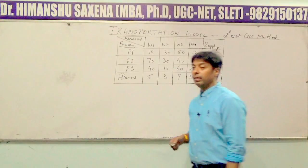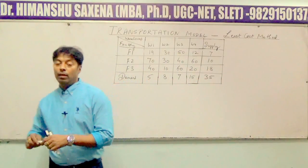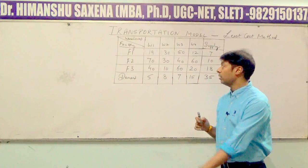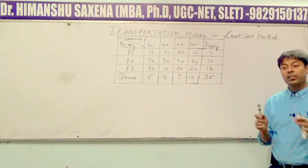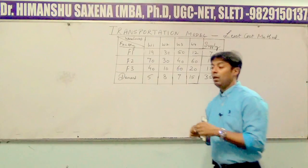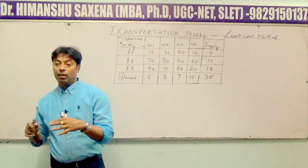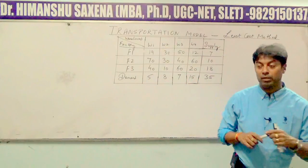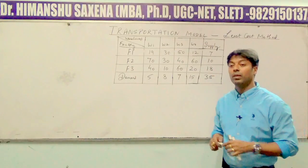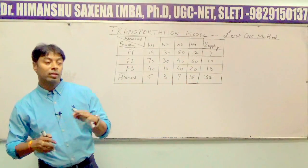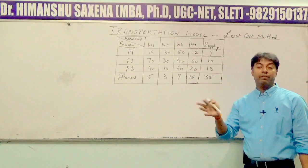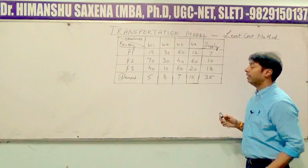In the earlier lecture you studied how to derive the initial optimum transportation cost using the Northwest corner method. Now we will derive it using the least cost method, and in the next lecture we will study Vogel's approximation method. These are the most popular models used to find the initial optimum transportation cost, which can further be revised using the MODI method.